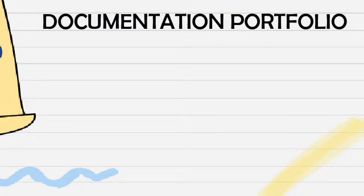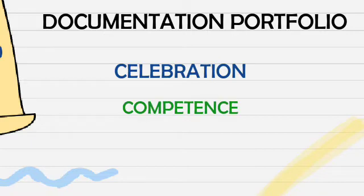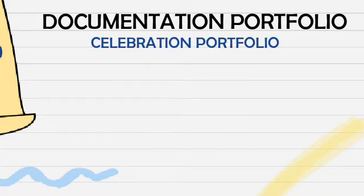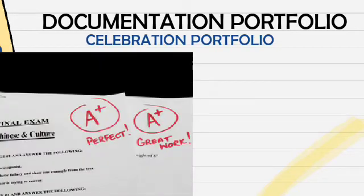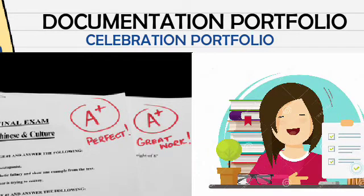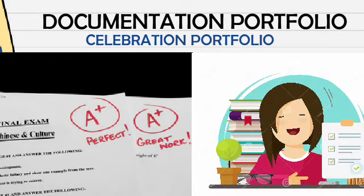So the documentation portfolio is divided into three: the celebration, the competence, and the project. For the celebration portfolio, it shows the student's best work. Examples are the highest score test, the highest grade paper, and the best project. These are examples since they demonstrate the highest level of achievement attained by the student, and the work collected shows students what they can do and showcases work that the student is proud of.